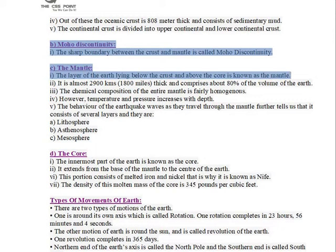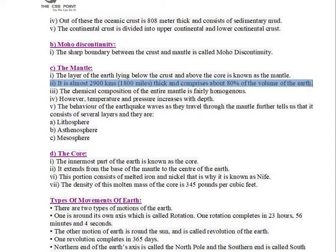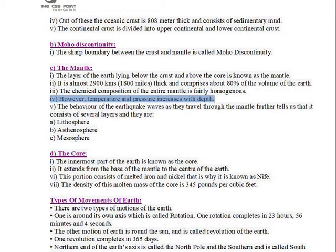The mantle is the layer of the Earth lying below the crust and above the core. It is almost 2,900 km (1,800 miles) thick and comprises about 80% of the volume of the Earth. The chemical composition of the entire mantle is fairly homogenous. However, temperature and pressure increase with depth.